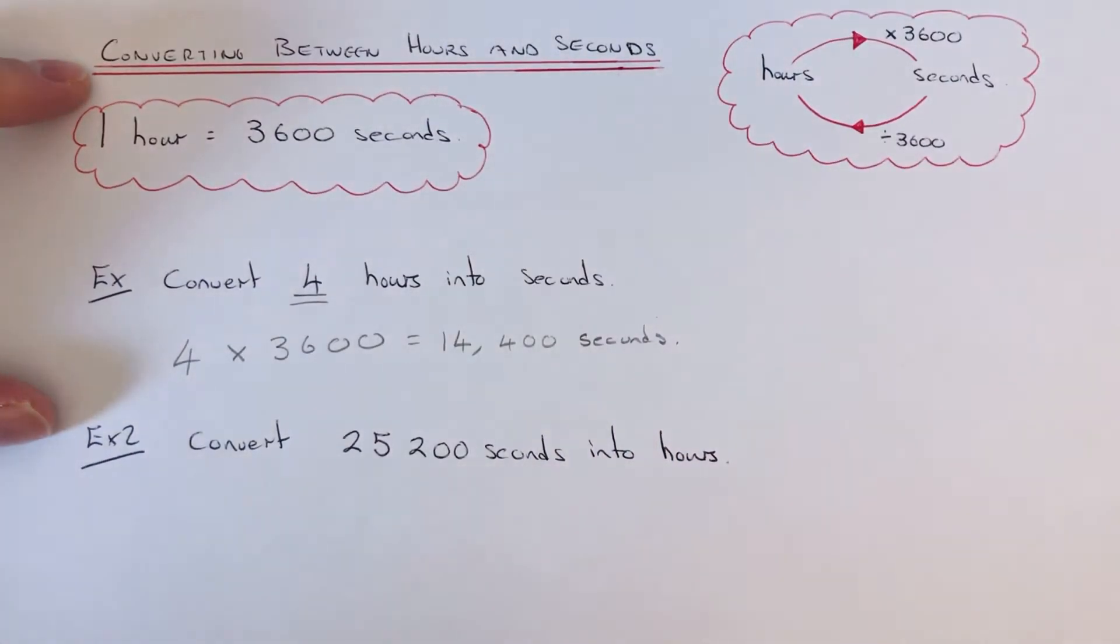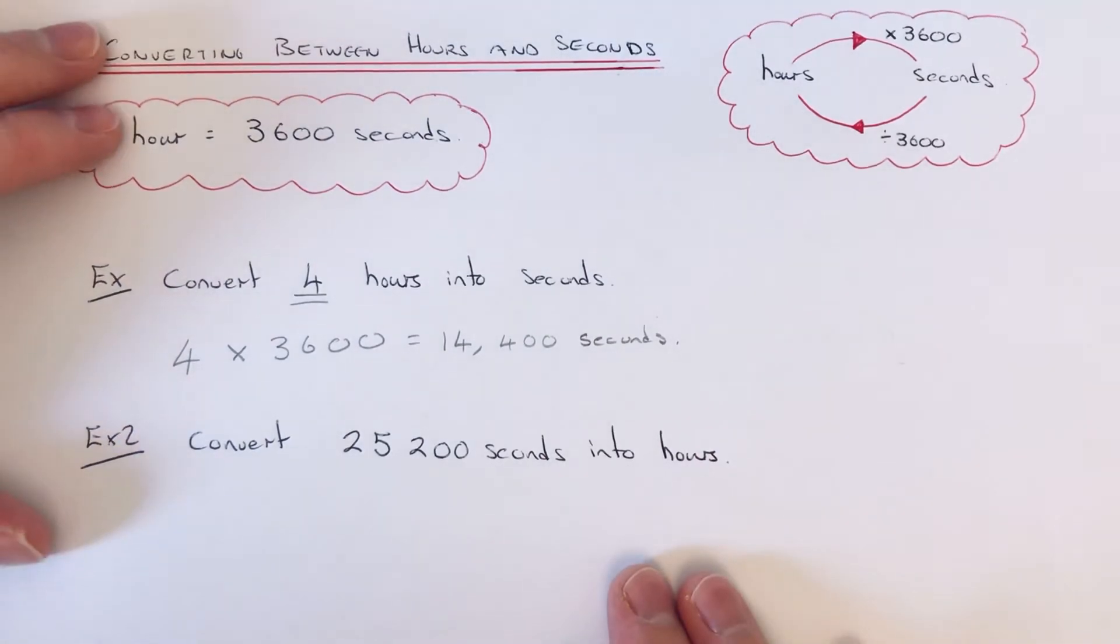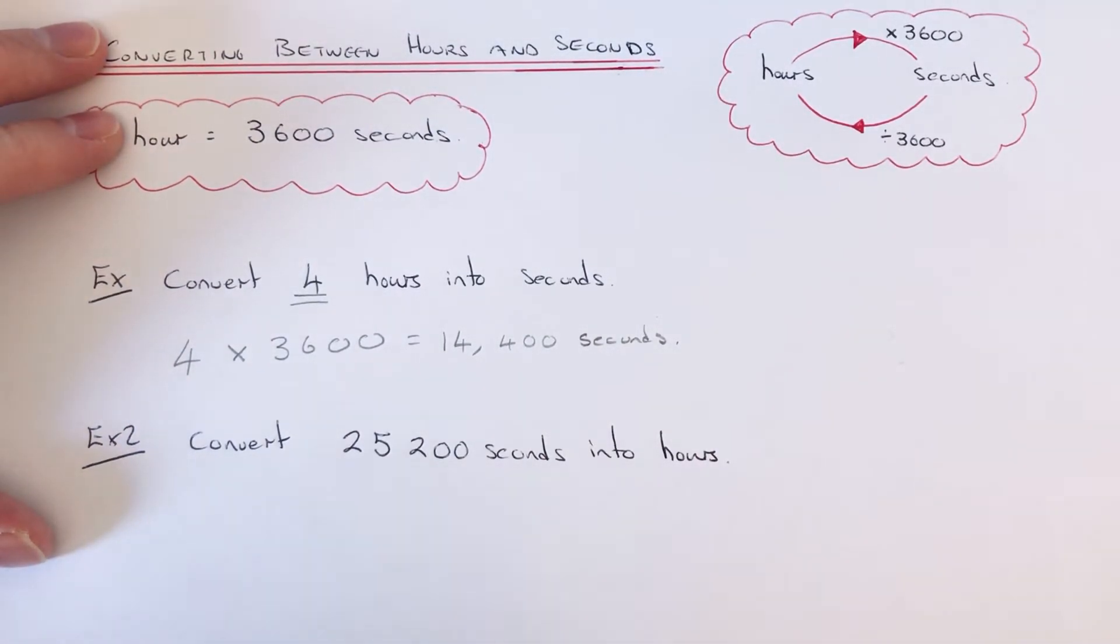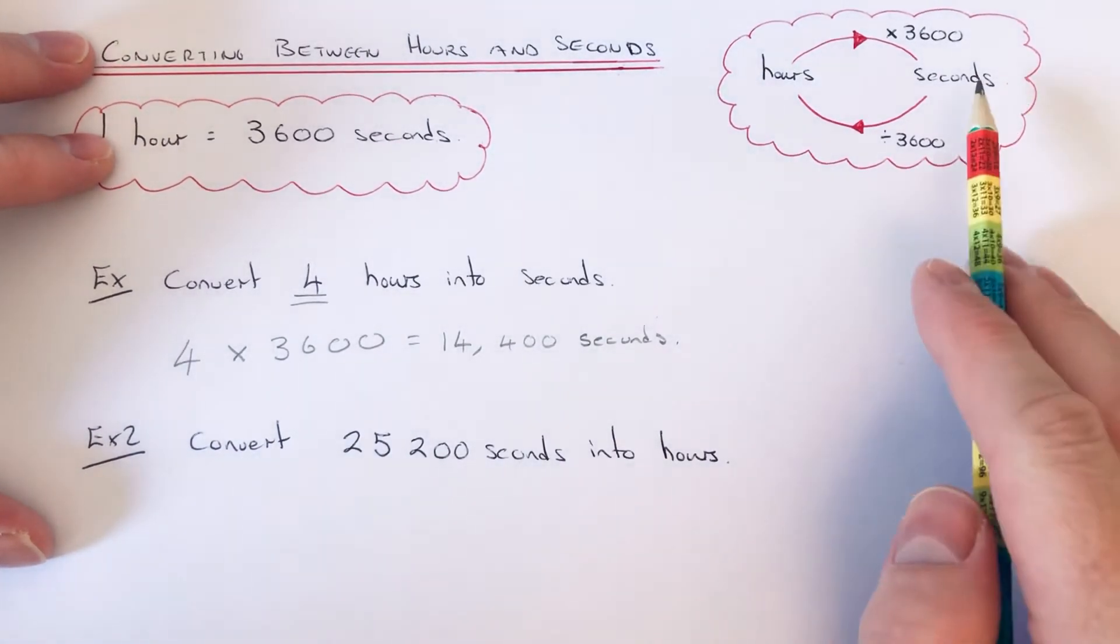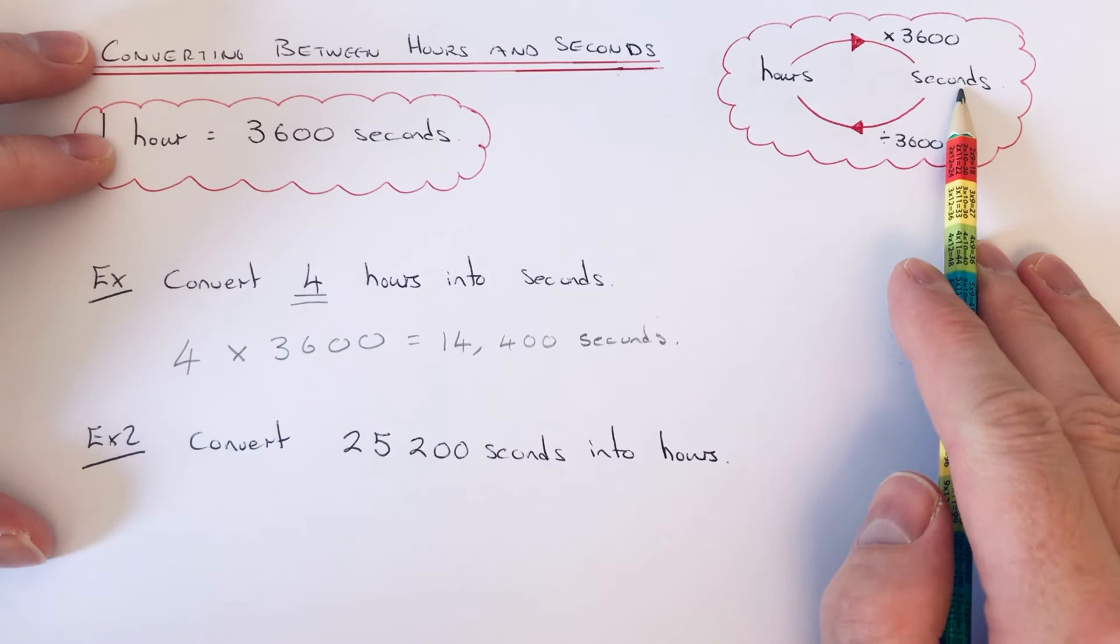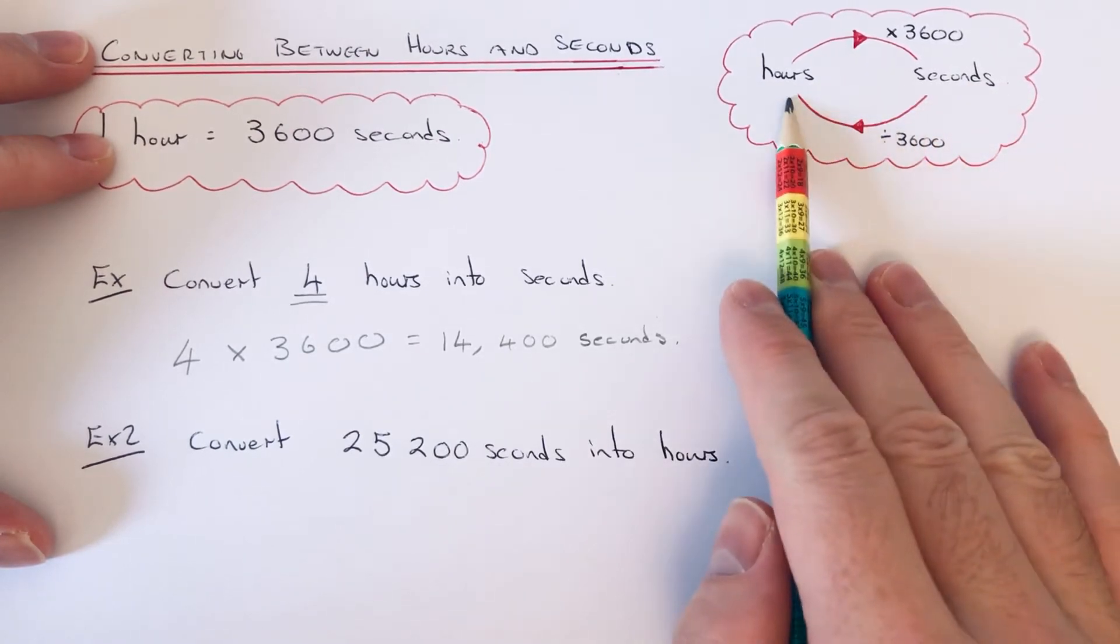So let's move on to example two. This time we've got to convert twenty-five thousand two hundred seconds into hours. Okay, so this time we're converting seconds into hours, so we need to divide the answer by 3600 because our answer is smaller when it's hours.